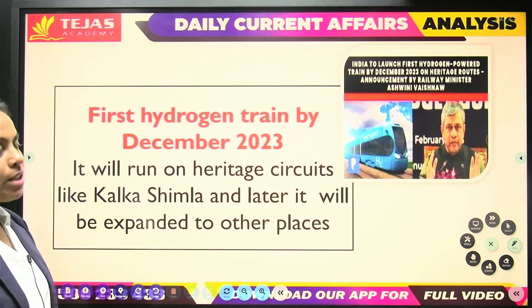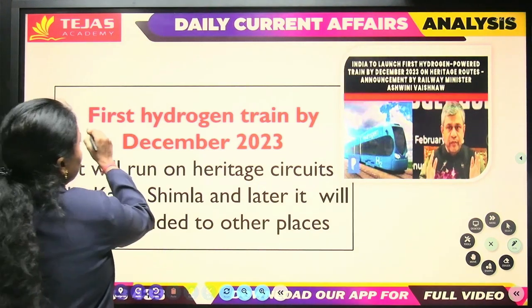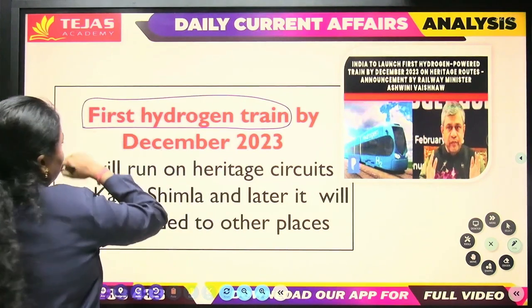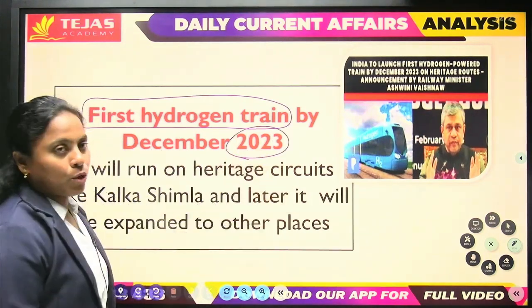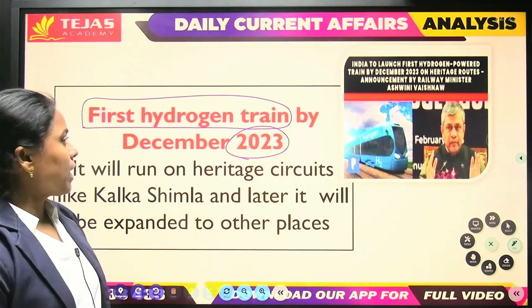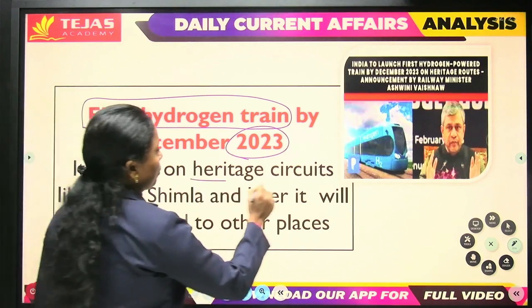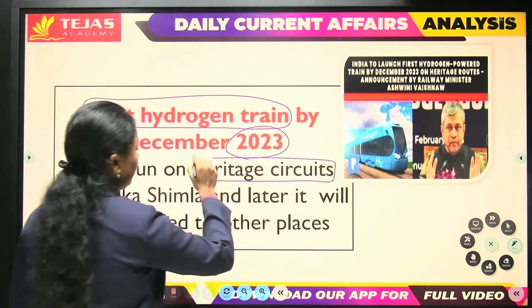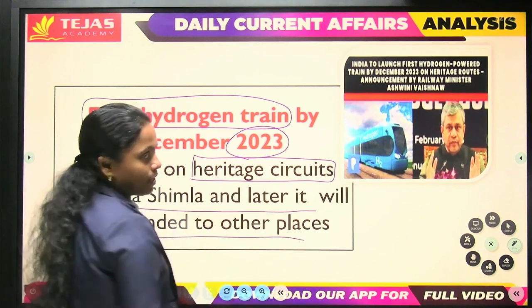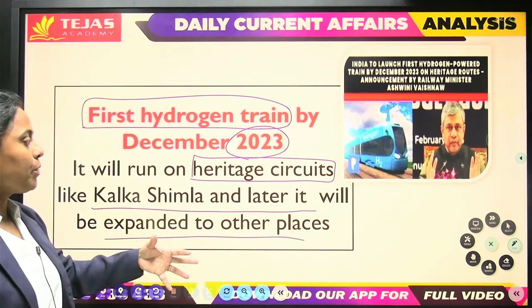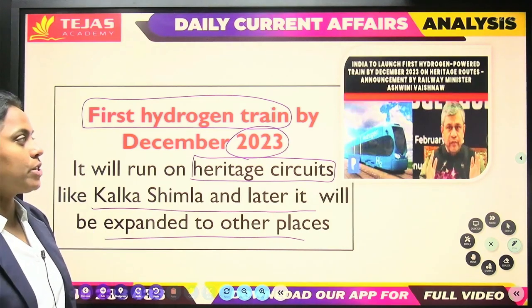Next, the Railway Ministry announced that the first Hydrogen Train is going to be completed by December 2023. Later, it will be expanded to other places, and it is also going to popularize tourism through heritage circuits. This is the first Hydrogen Train.